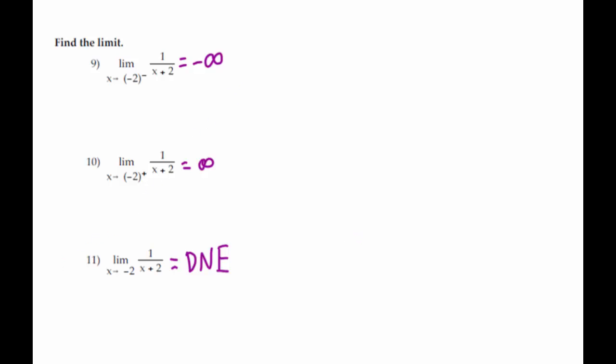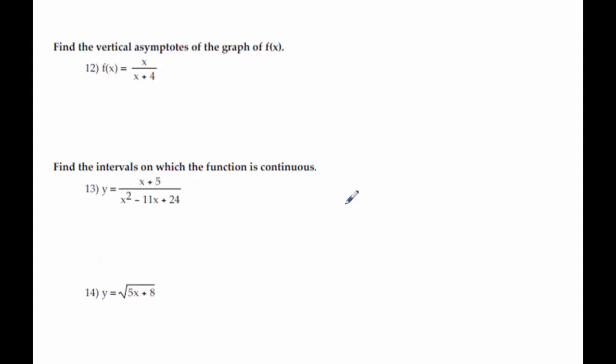Number 12 is pretty easy because it just asks for the vertical asymptote — you can graph it and figure it out, or just set the bottom equal to zero and solve. Either way, our vertical asymptote is x equals negative four. The only way that could be more difficult is if we had to factor to find it, because maybe there's more than one vertical asymptote. Something similar happens on number 13 — we'd factor the bottom of 13.